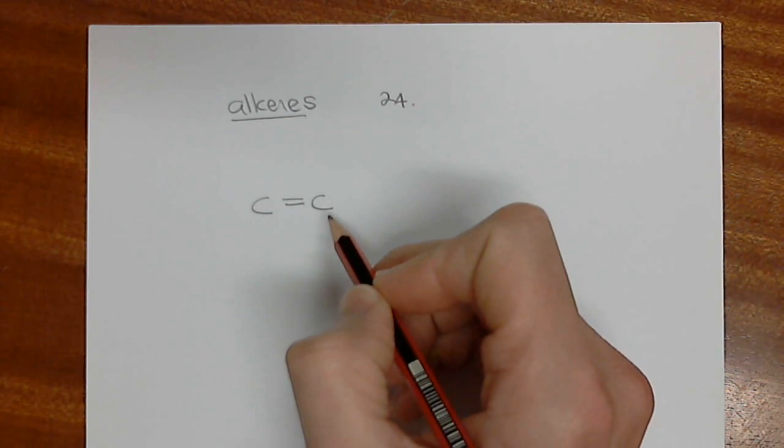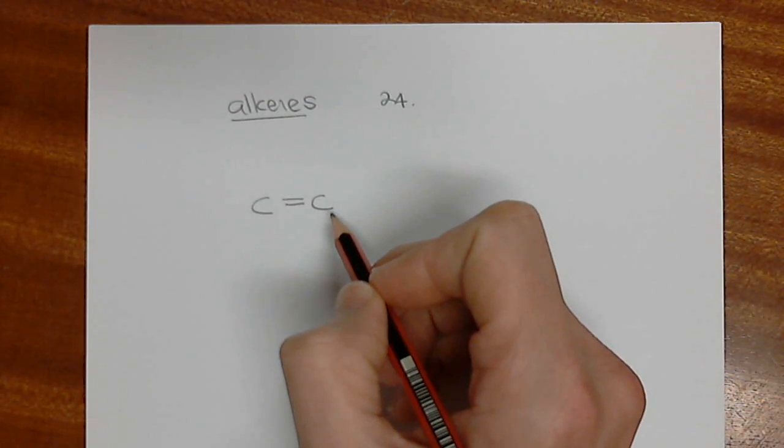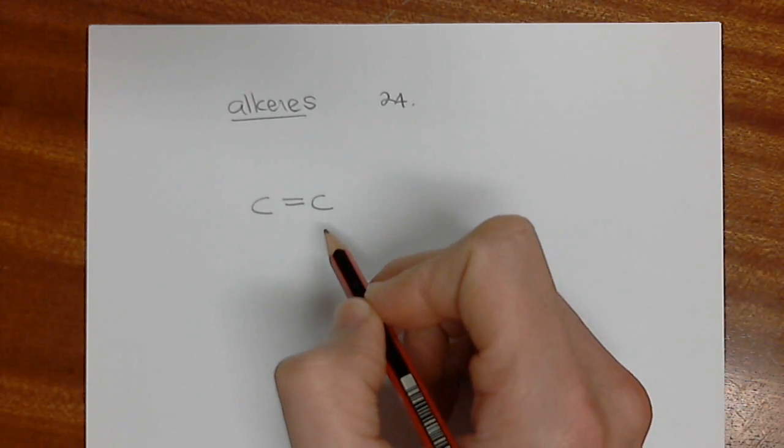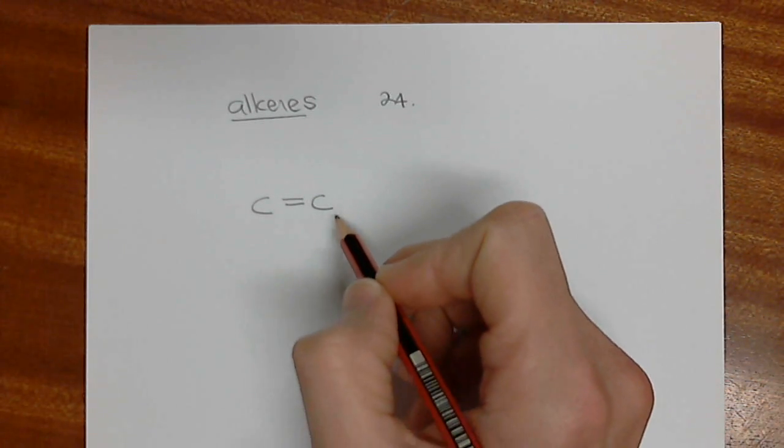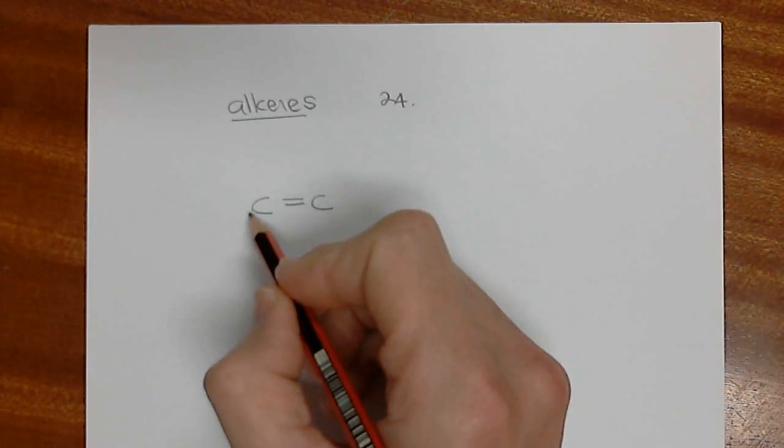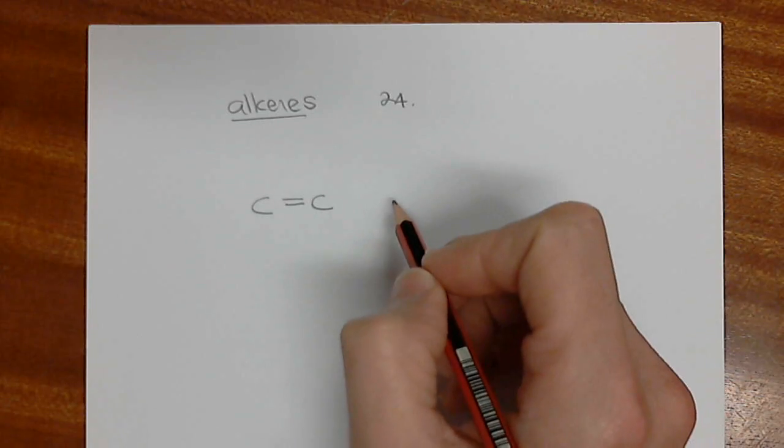Once we have a double bond to carbon, we are now in a position to start doing reactions on organic compounds. Organic compounds that have double bonds in them are able to react and have reactions occur on them. So we need to understand exactly what this double bond means in order for us to move forward.